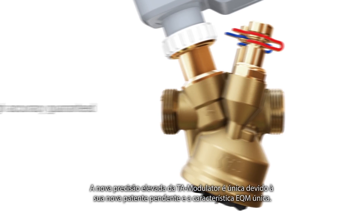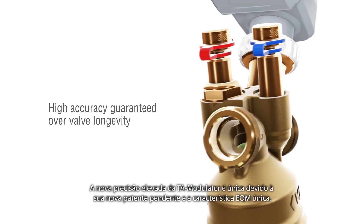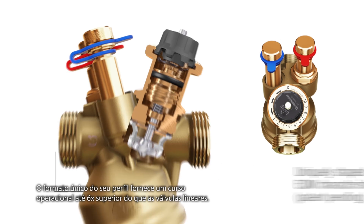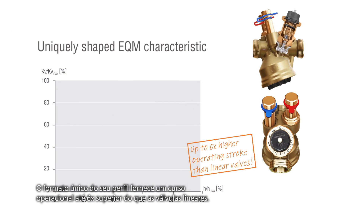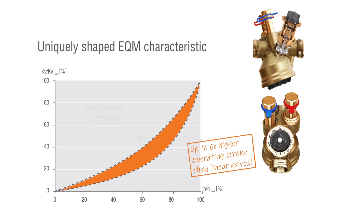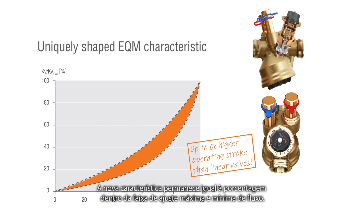The new highly precise TA modulator is unique due to its patent pending uniquely shaped EQM characteristic. Its uniquely shaped profile provides an up to six times higher operating stroke than linear valves. Therefore, TA modulator is able to precisely control also very small flows. The new characteristic remains equal percentage within the range of maximum and minimum flow settings.